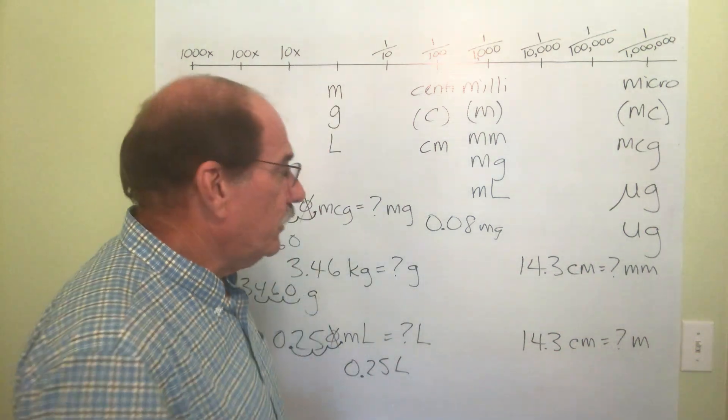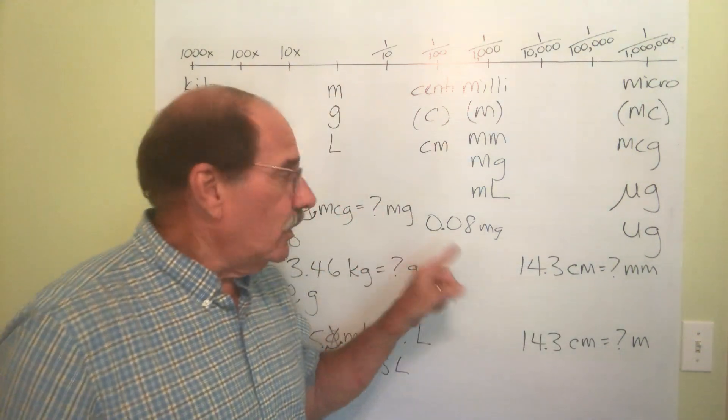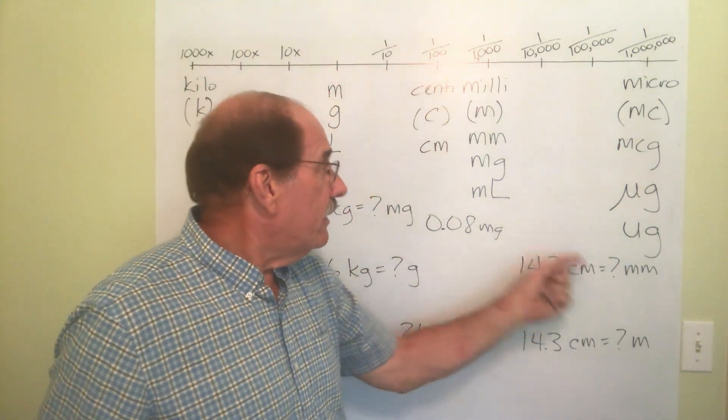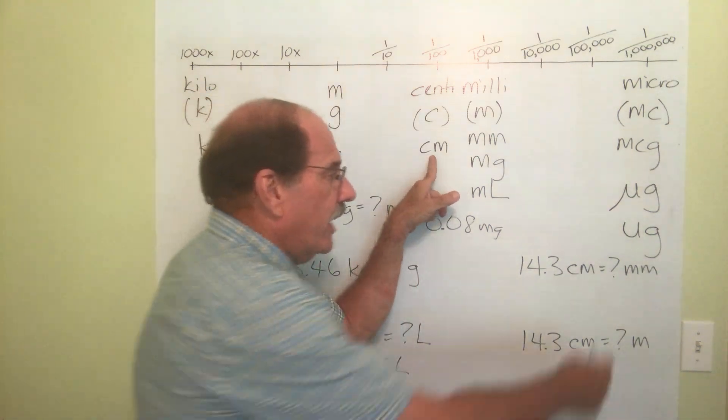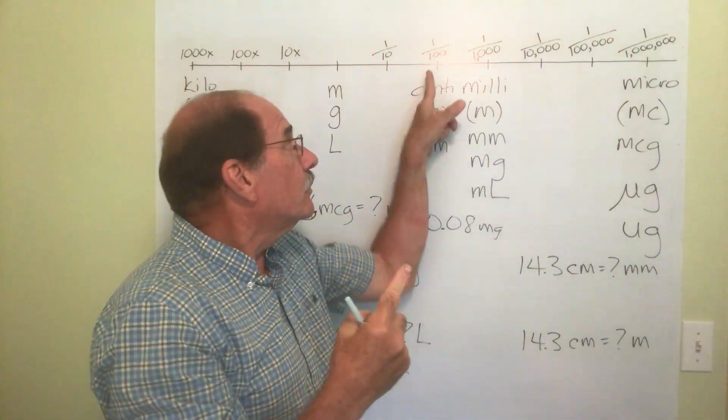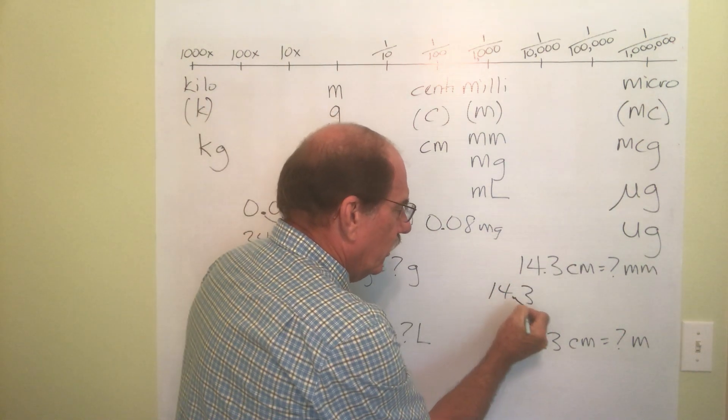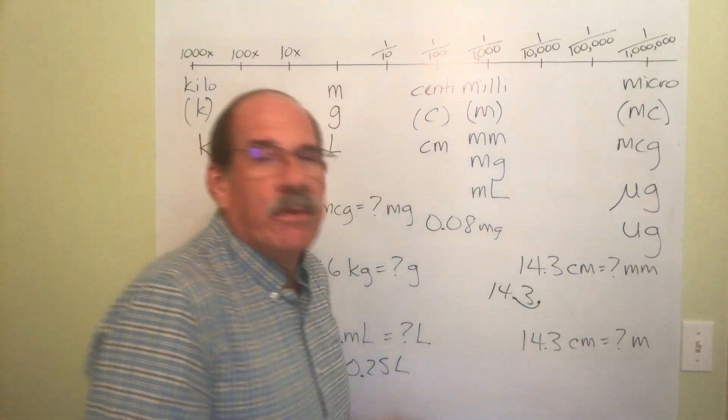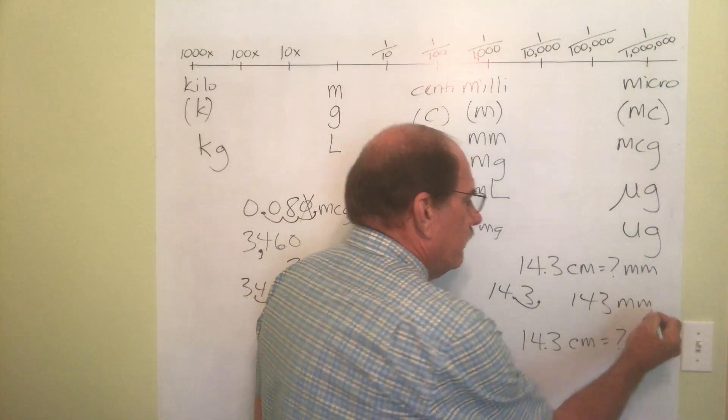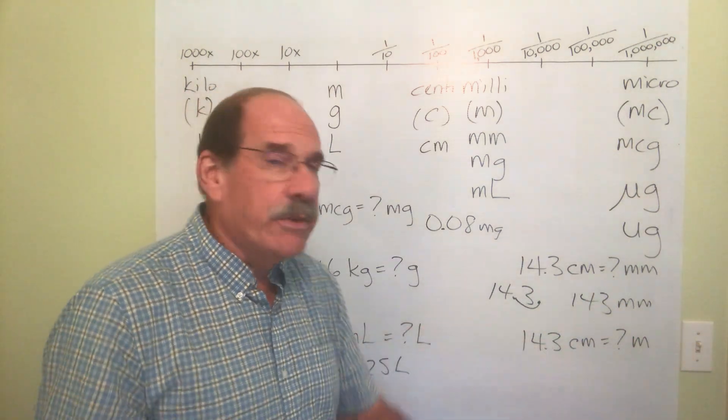You might need it, though. So here's what's going on. I've got something 14.3 centimeters long. I need to know, how many millimeters is that? Well, if I know how many centimeters something is, I'm trying to find how many millimeters it is. I'm moving this to the right, only one place. Just one little hop. So 14.3, the dot goes from here. One jump to the right. Dot ends up there, although I don't write it because it's a whole number, and the answer is 143 millimeters. So 14.3 centimeters is 143 millimeters.